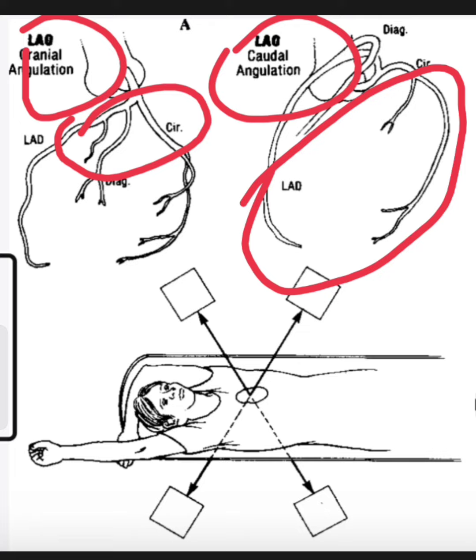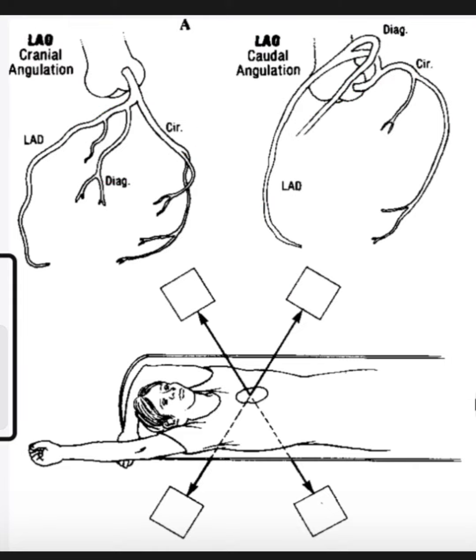So if you want to see the start of coronaries, you will go for cranial angulation. And if you want to see the distal branches, then you go for caudal angulation.